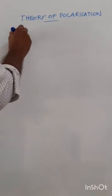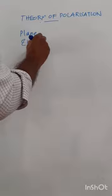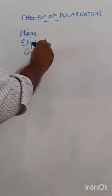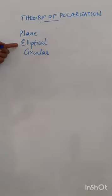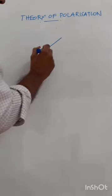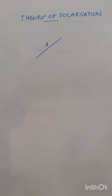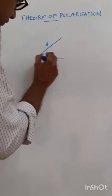We will be discussing plane polarized light, elliptically polarized light, and circularly polarized light. We will derive mathematical general equations for polarization and discuss the three different cases: plane polarization, elliptical polarization, and circular polarization. For that, we are assuming an incident light of amplitude A, which is allowed to fall on a birefringent crystal making an angle theta with the optic axis.